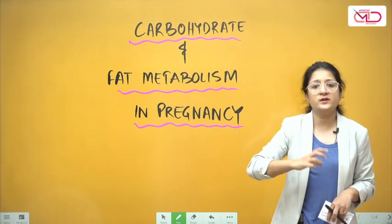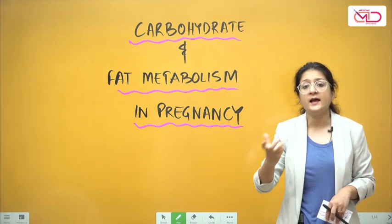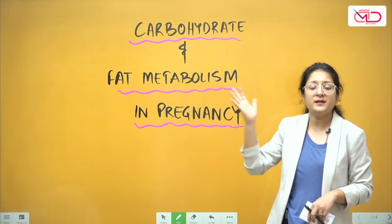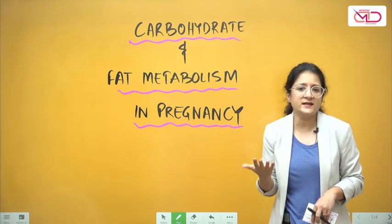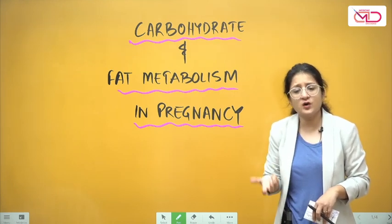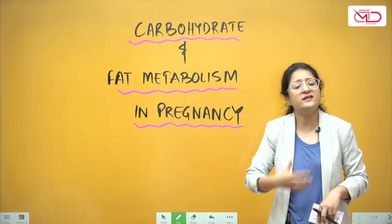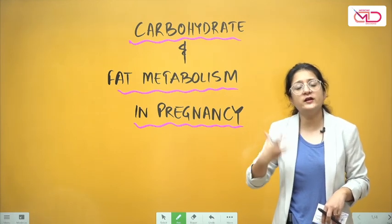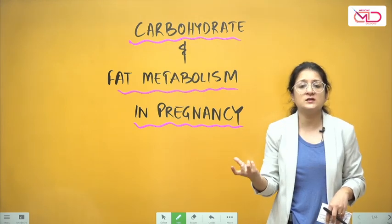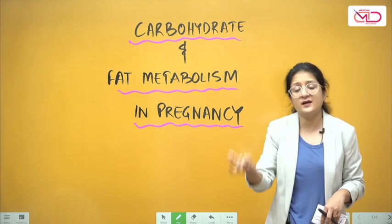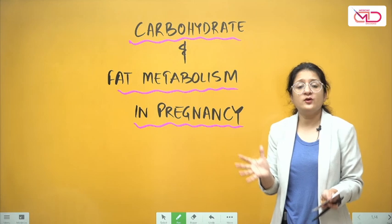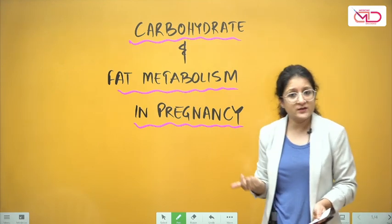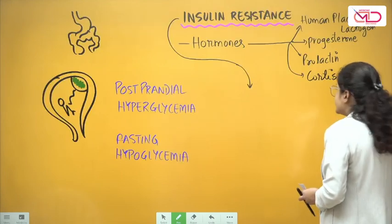All the metabolic changes that happen in our body — the adjustments that happen during periods of starvation, exercising, fasting, and even pregnancy — are directed towards achieving a purpose. The purpose of the metabolic change in pregnancy is two things: a mother has to meet her own energy requirements, since pregnancy is a state where metabolic processes at various tissues like the uterus, breasts, and placenta are increased, and she also has to meet the energy requirements of the growing fetus.